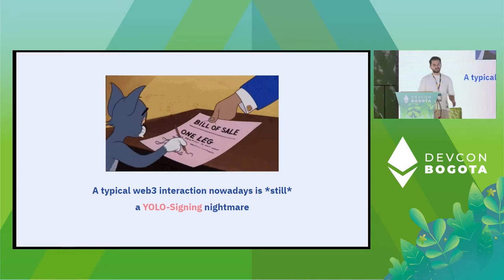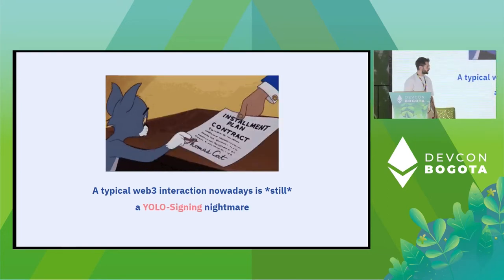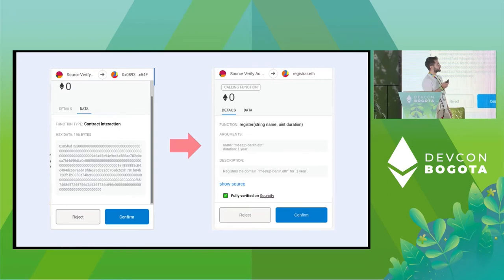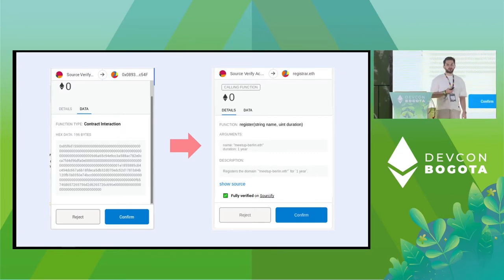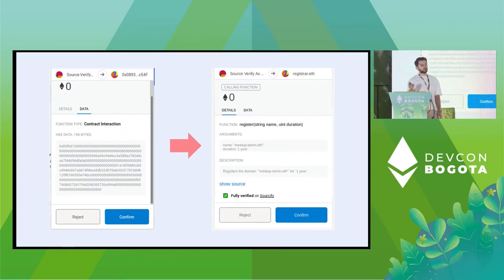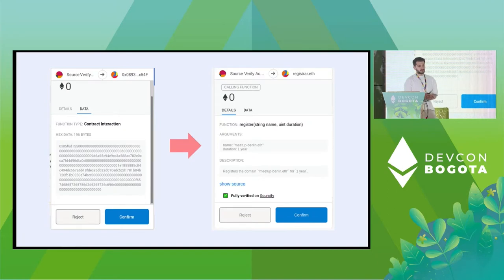YOLO signing — they give you things to sign and you're just like, sign on, hope for the best. What we want is to move from the left-hand side to the right-hand side. Many wallets have actually started to decode things, like MetaMask using Truffle and decoding ABI. But still, we have a long way to go.